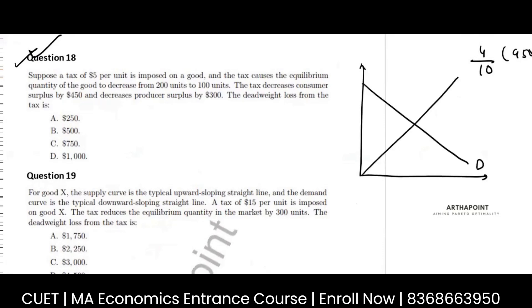This is demand and supply. And I am going ahead and going from 200 to 100. So this is 200. And my new equilibrium is 100.